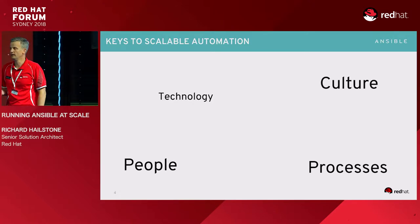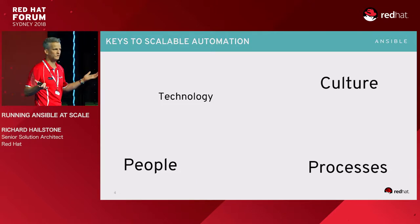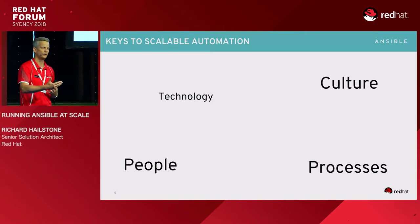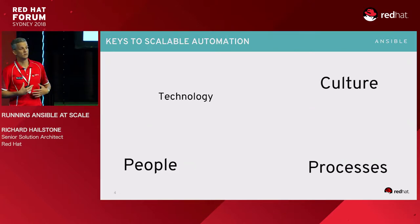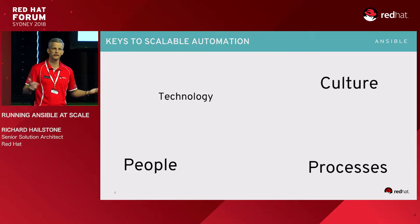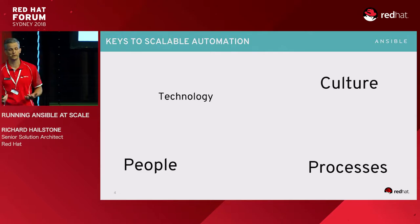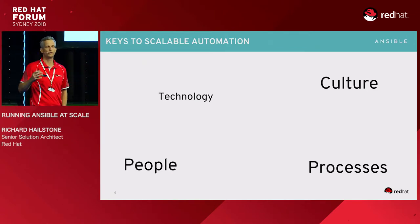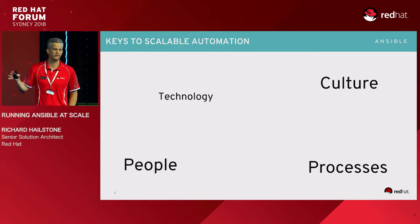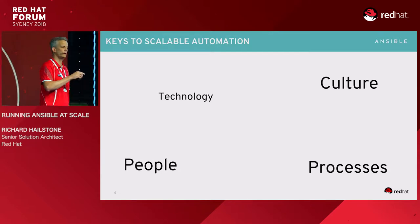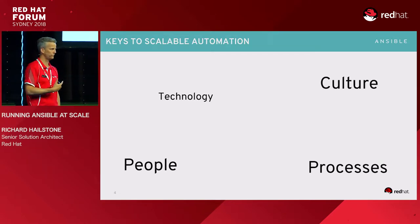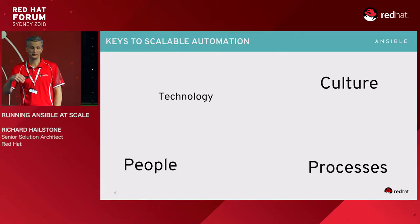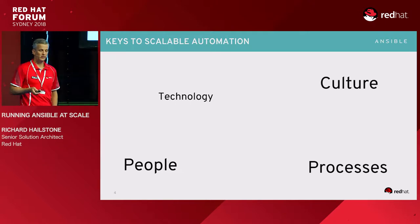As we heard in the keynotes this morning about open source projects — they need communities to contribute and collaborate, and that is a culture. We need to create a culture to develop Ansible content, collaborate, and develop new processes that help automation exist within our environment. Some of these processes may not have existed before — we need to work out how our automated procedures fit with existing change management platforms and approval processes.